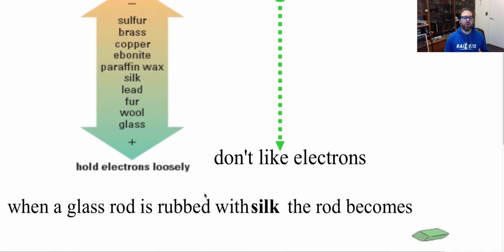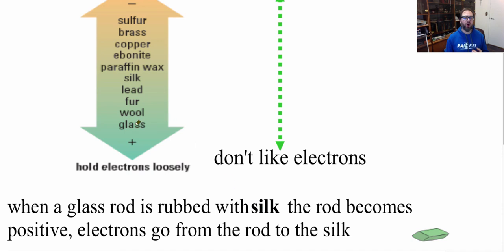Let's take a look at my first example. If I have a glass rod and it's rubbed with silk, what happens to the glass rod? I'm going to look at my glass rod and it's going to be rubbed with silk. And silk is above it, so that means the silk will take the electrons. So my glass rod will end up becoming positive because electrons go from the rod to the silk, because electrons are always going to go up.